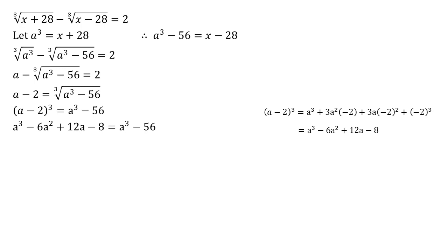We can subtract a cubed and add 56 to both sides. So we get that minus six a squared plus 12a plus 48 is equal to zero. So we've got a quadratic to solve.